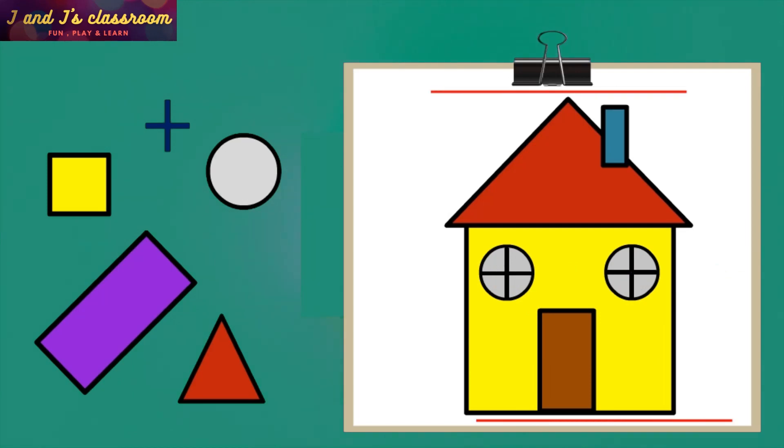Finally, color the house to make it more attractive like my drawing. Now our house is ready. If you want, you can draw a tree near the house.